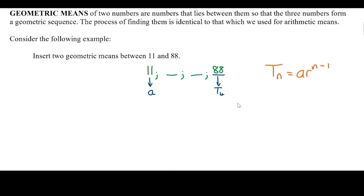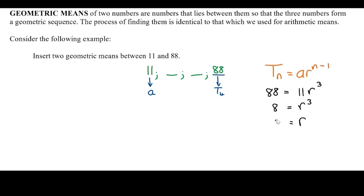Remember our formula: tn = a·r^(n−1). So we put 88 on one side, a is 11, and we get 88 = 11·r³. We divide both sides by 11 to get 8 = r³, then raise both sides to the power of a third — find the cube root — and we get r equals 2.